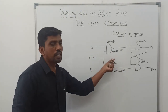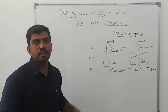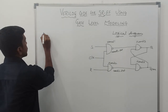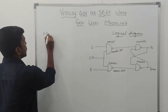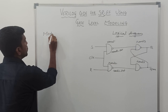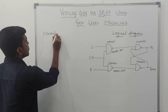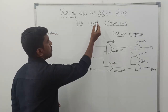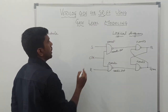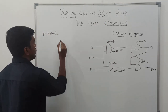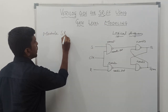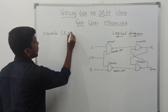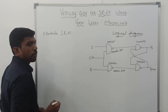Using this logical diagram, we can write the program in a very easy manner. As usual, first write the module keyword, then the module name. Here the module name is SR_flip_flop.